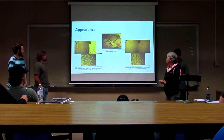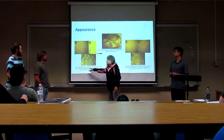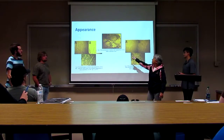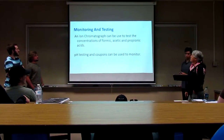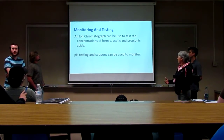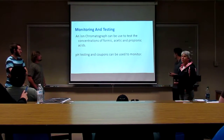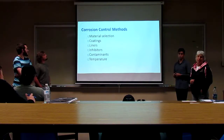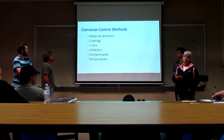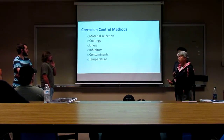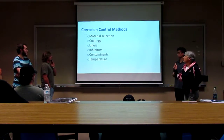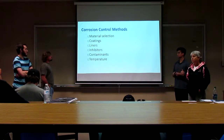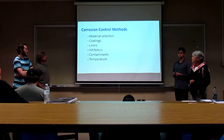These pictures show different concentrations of formic acid corrosion: on the left, 20% concentration at around 40°C, and on the right, 60% concentration at 40°C. Monitoring and testing can be done using ion chromatography, pH testing to determine acid concentration, and coupons to monitor corrosion inside systems. Corrosion control methods vary specifically based on the container type, concentration, and temperature of the acid. Key approaches include material selection, coatings, liners in tanks, use of inhibitors, keeping down contaminants, and monitoring the temperature of the product.